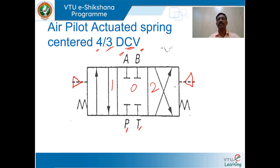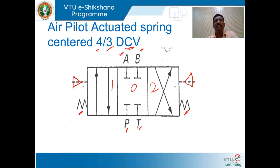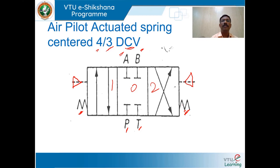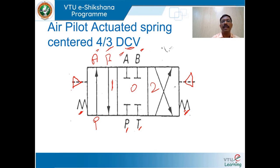When the valve is not actuated by an air signal, opposing spring forces move the valve to the center path configuration. When the spool receives an air signal on one side, the valve shifts to position 1 — P connects with A and B connects with T.